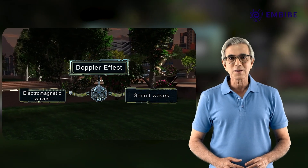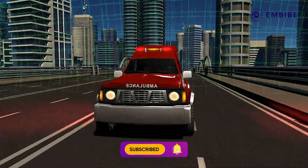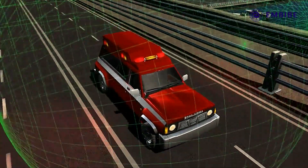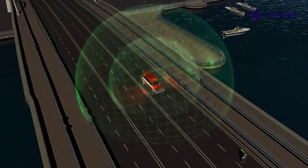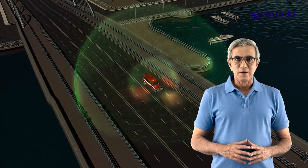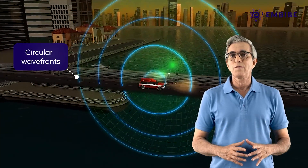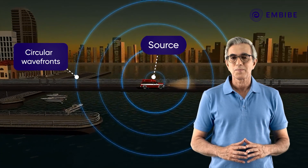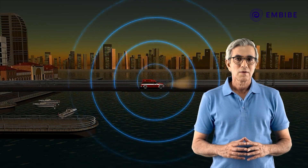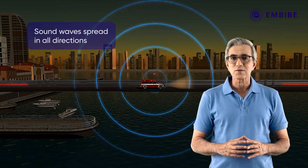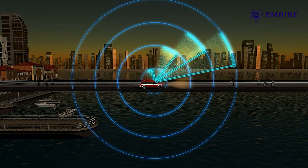Let us first study the Doppler effect observed in sound waves. We know that in the real world or three-dimensional space, sound propagates in a medium in the form of spherical wave fronts with the source as the center. For ease of understanding, we will represent the propagation of sound in two dimensions in the form of circular wave fronts with the source as the center. Consider a stationary emergency vehicle blowing the siren — the emitted sound waves spread out in all directions, giving rise to a concentric circular pattern of waves.